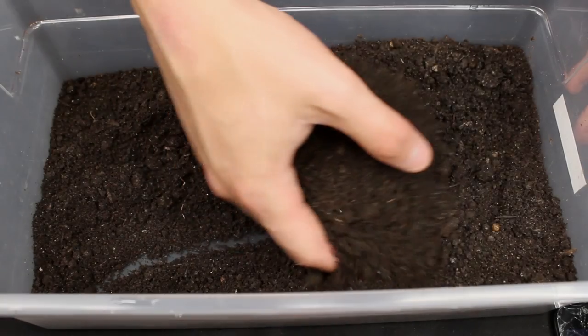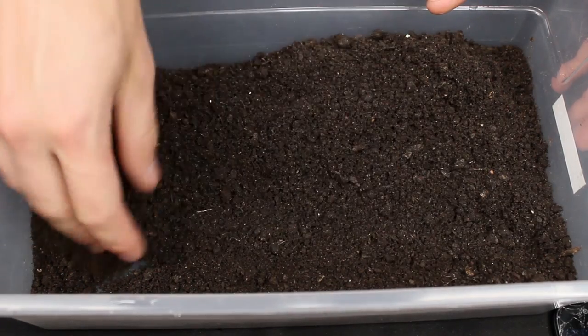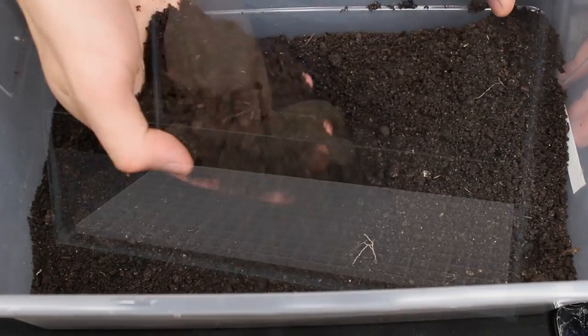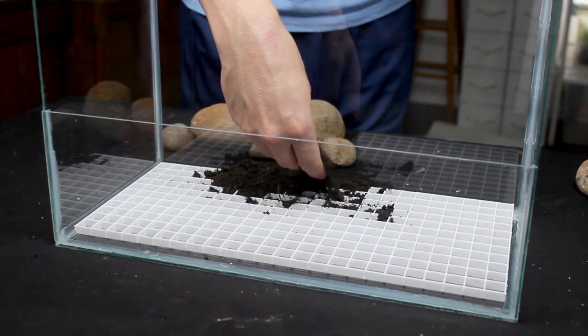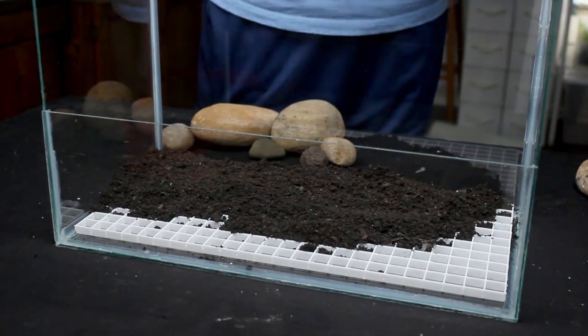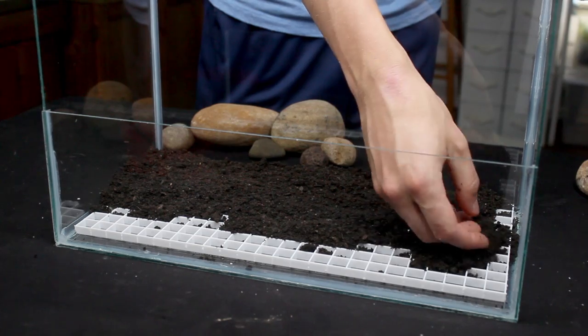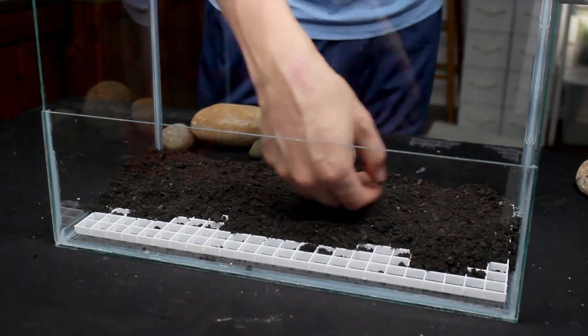I decided to do something different with this tank and I'm going to set it up using the Walstad method. If you're unfamiliar with what that is basically it's the use of regular soil capped off with gravel instead of manufactured aqua soil. I only added a thin layer to start so that it would give me a good base for the landscape.